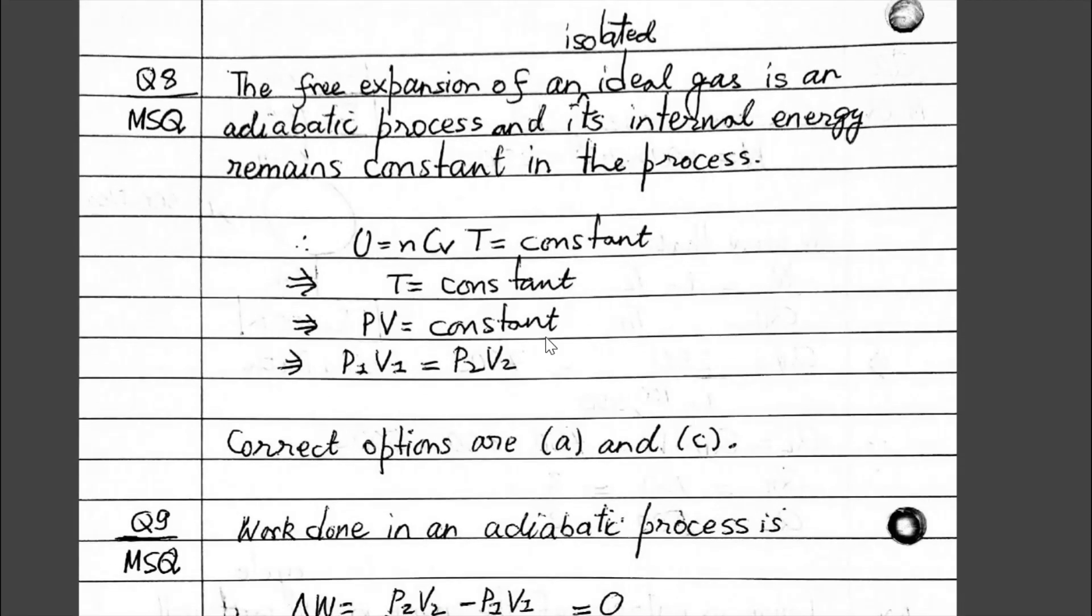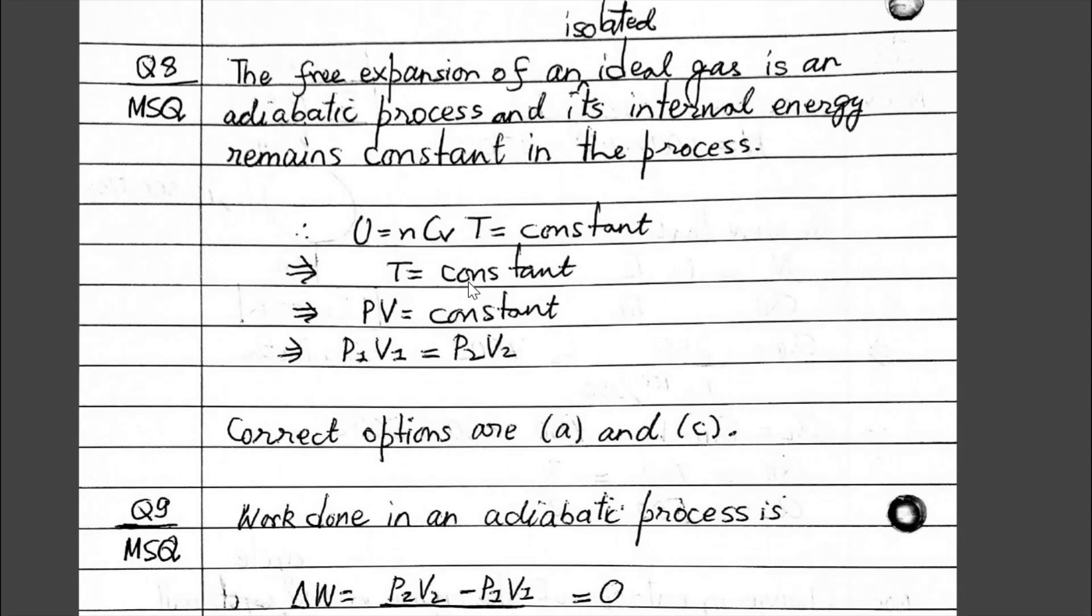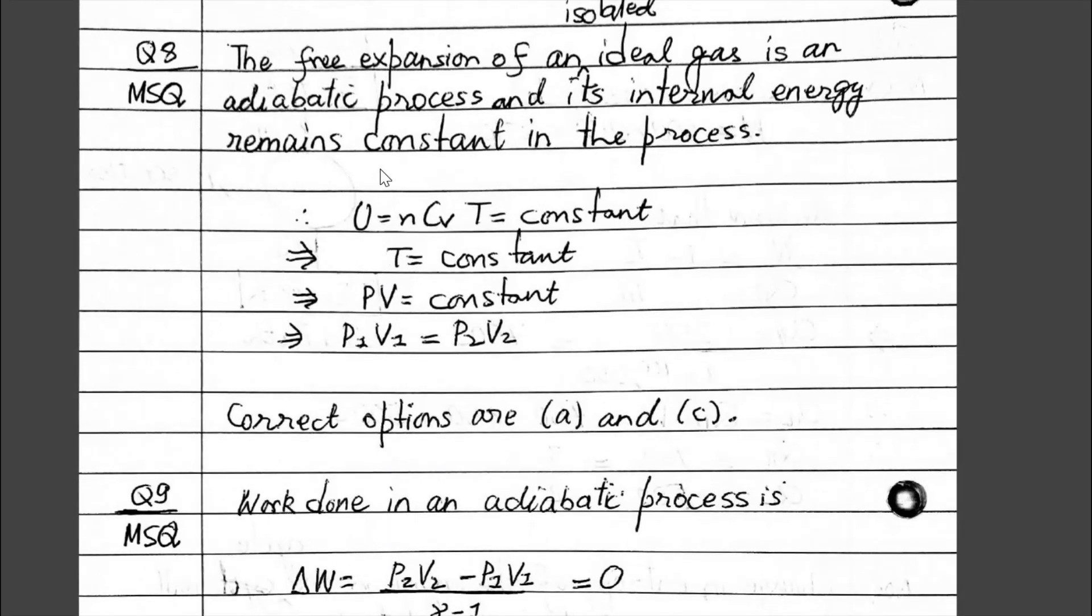The next question is also from the MSQ section. Here, two options are correct: A and C. One is pressure times gamma is constant, and the second option is P1V1 equals P2V2.